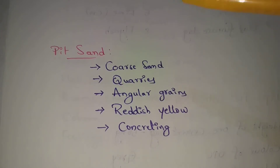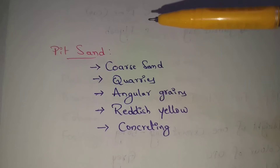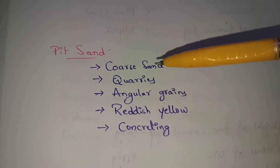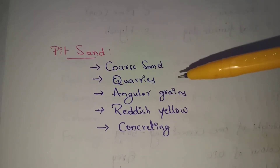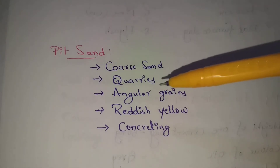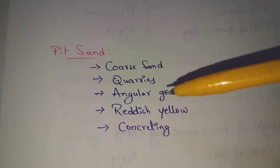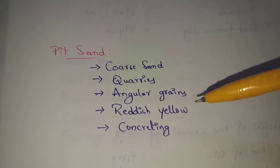Pit sand grain shape is triangular. The color is reddish and yellow type.